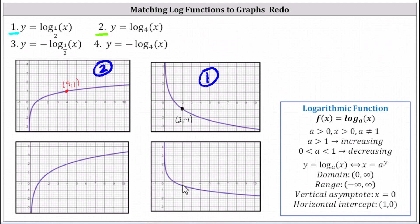Of the two remaining graphs, only one contains the point two comma one, which is the graph in the lower left-hand corner. More specifically, if we reflect the graph of number one across the x-axis, the piece above the x-axis would now be below the x-axis, and the piece below the x-axis would be above the x-axis. This is why the graph of y equals negative log base one half of x is that graph.